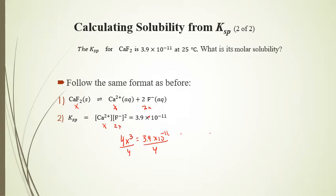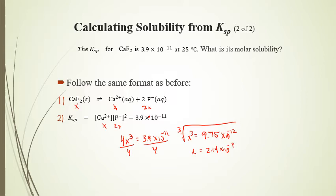Dividing each side by 4 gives X³ equals 9.75 × 10⁻¹². Taking the cube root gives X equal to 2.14 × 10⁻⁴. This is the molarity of the Ca²⁺ and also the molar solubility of CaF2 that will actually dissolve in solution.